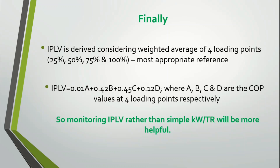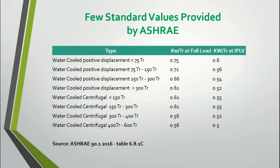Monitoring IPLV rather than simple kilowatt per TR is more significant. For reference, ASHRAE standard values include: water-cooled positive displacement or reciprocating chiller below 75 TR — full load kW/TR of 0.75, IPLV of 0.60; water-cooled centrifugal chiller of 150–300 TR — full load kW/TR of 0.61, IPLV of 0.55. These standard reference values can be used to cross-check your measured kW/TR if no designer-specified values are available.